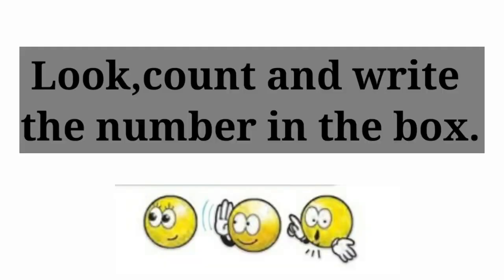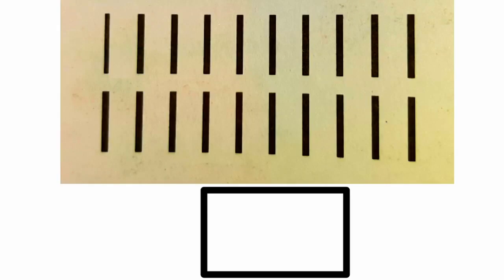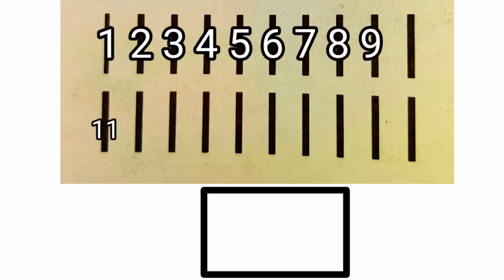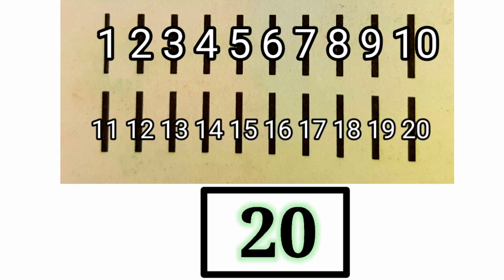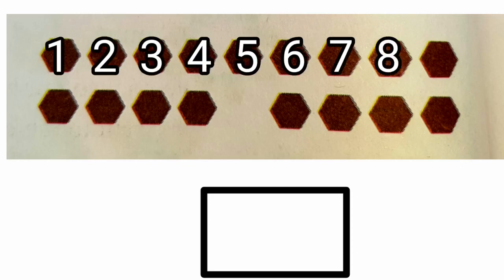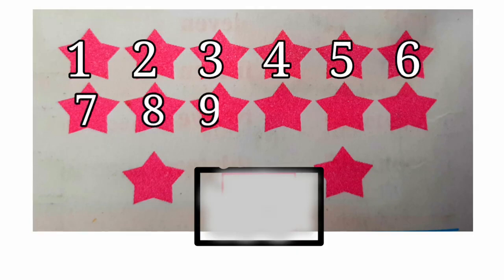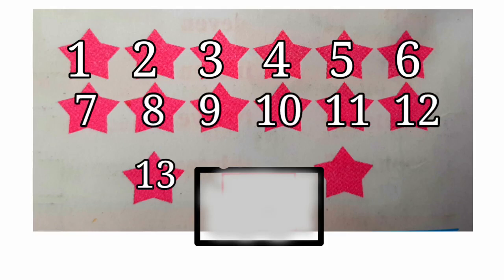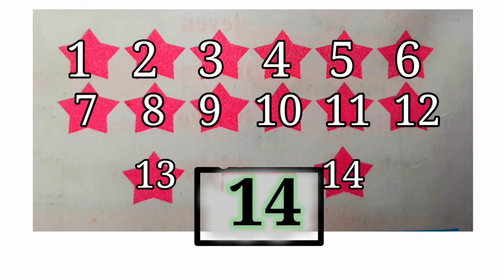Now, look, count, and write the numbers in the box. How many lines are there? Let's count. Look at the lines carefully. 20 lines. Now look at the shapes. How many shapes are there? Let's count. Look at this carefully. 17. Very nice. How many stars are there? Let's count. 14 stars. Very good.